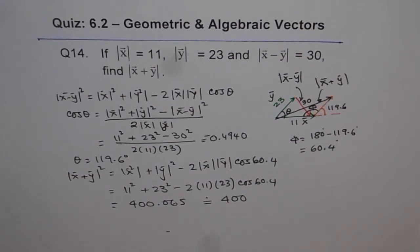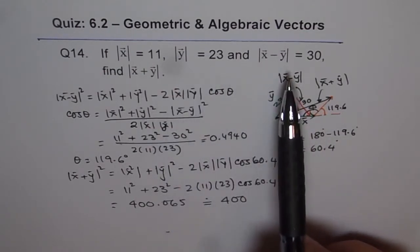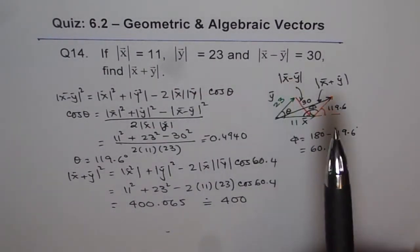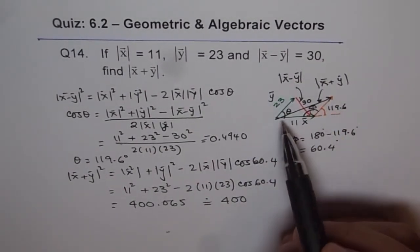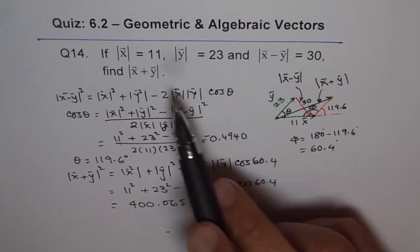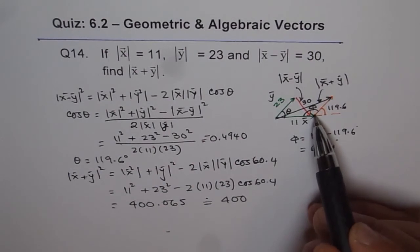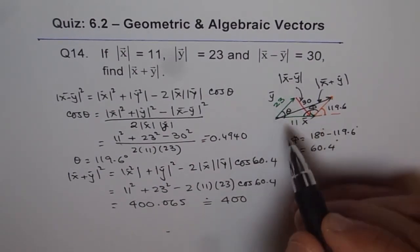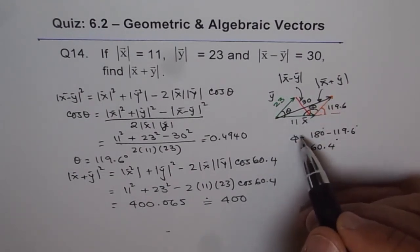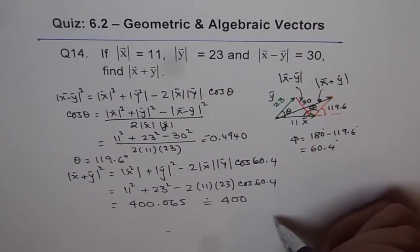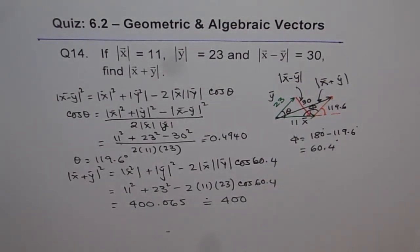I hope you understand the strategy. From the given values of |x|, |y|, and |x minus y|, we find the angle between vectors x and y. Then 180° minus that angle theta gives us the angle to use for the x plus y triangle, and we work out to get our answer of 400. I hope you understand and appreciate it. Thank you.